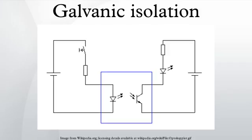Galvanic isolation is used where two or more electric circuits must communicate, but their grounds may be at different potentials. It is an effective method of breaking ground loops by preventing unwanted current from flowing between two units sharing a ground conductor.